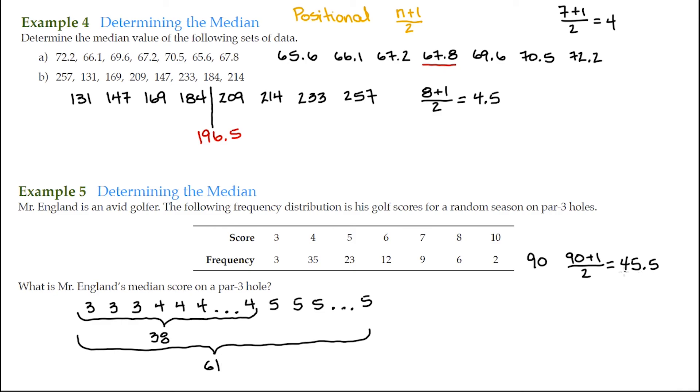So the 45th and a half or between the 45th and the 46th scores has to occur within the 5s here. So it falls in between two 5s, add the two 5s together divide by 2, we have a median score of 5.